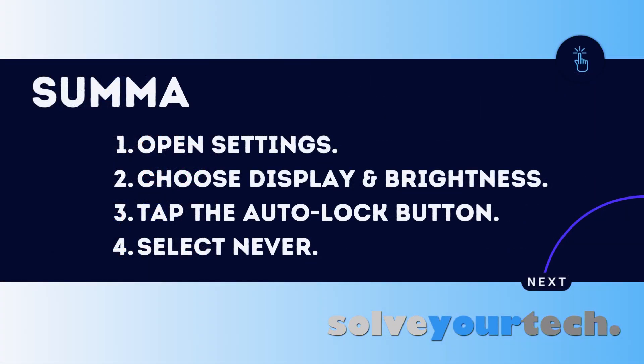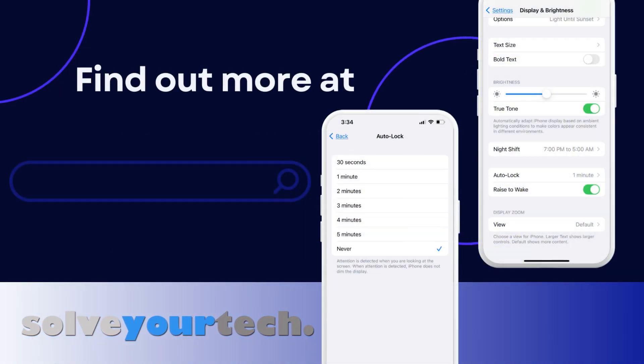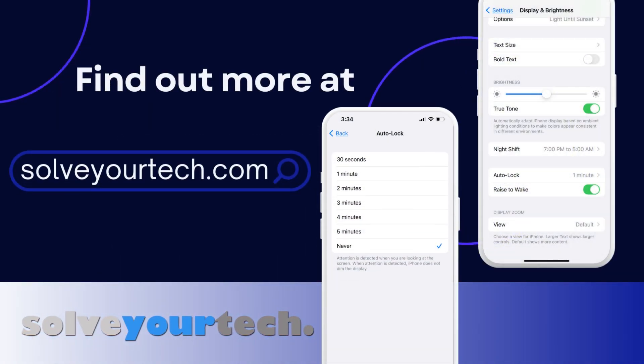To summarize, when you want to keep your iPhone screen on, you need to open the Settings app, choose the Display and Brightness option, select Auto Lock, then choose the Never option. For more information on this topic and to read the full article, visit SolveYourTech.com.